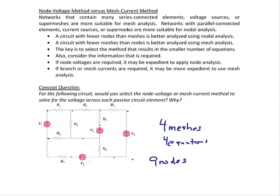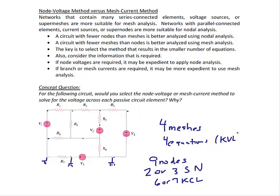Nine nodes doesn't necessarily mean nine equations since there are some voltage sources. However, depending upon where you put the ground, you're going to have two or three super nodes. You're probably still going to have at least six or seven KCL equations versus the four KVL equations for the mesh current method. So no matter which way you look at it, the mesh current method is definitely the way to go.